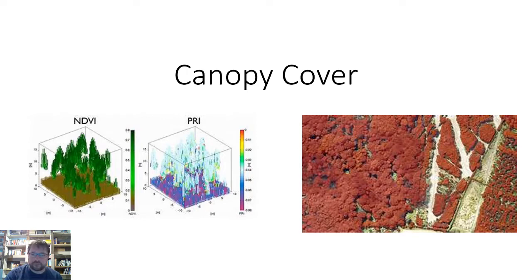We're going to look at some examples. This is a LiDAR example — a laser example where a plane flies over and shoots lasers down, telling you basically the height of the trees and also the amount of area they take up. This is an aerial photo that's been rendered so all vegetation becomes red, making it easier to stick into a program and get the canopy cover.